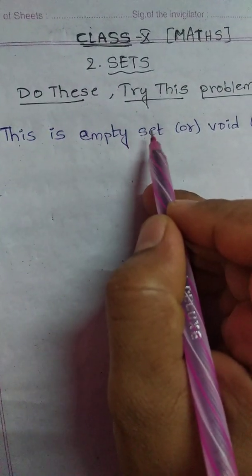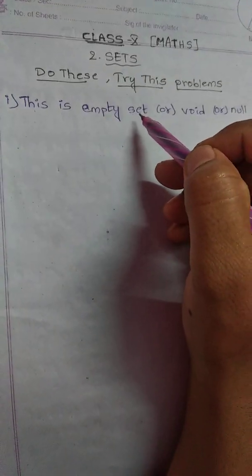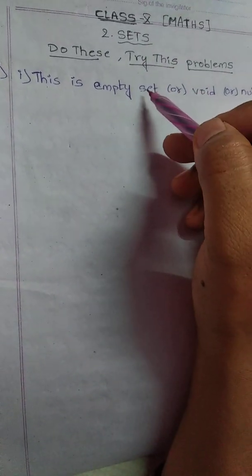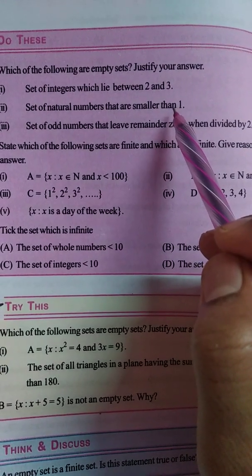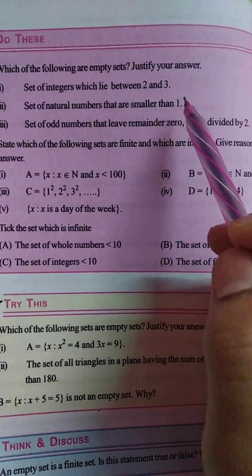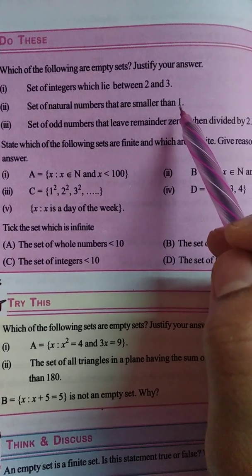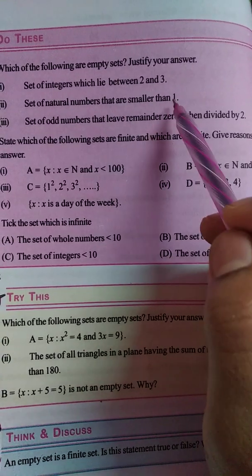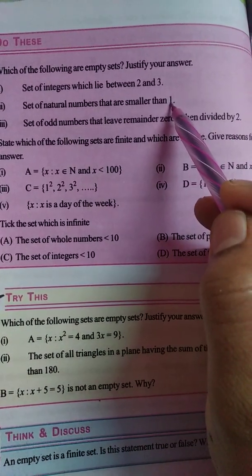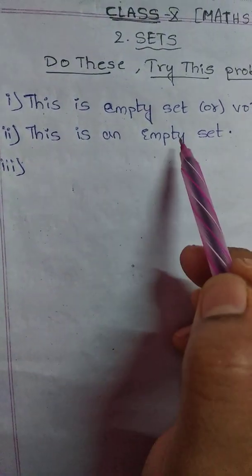This is called an empty set, void set, or null set — three names for this one. Second one: the set of natural numbers that are smaller than 1. The natural numbers start from 1, so there are no natural numbers smaller than 1. So this is also an empty set.